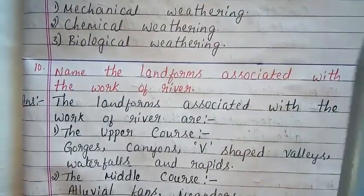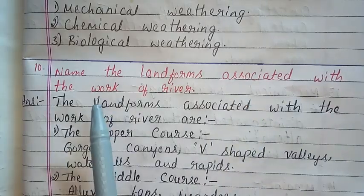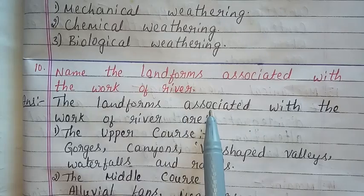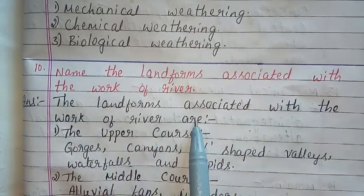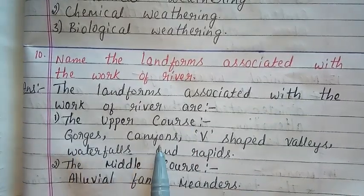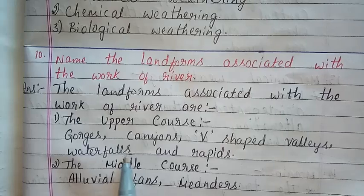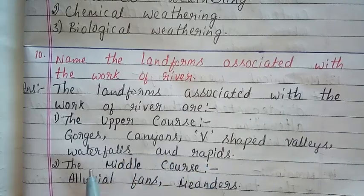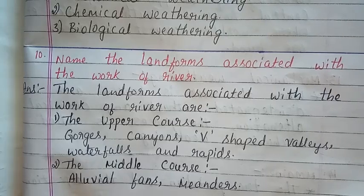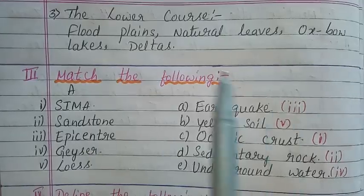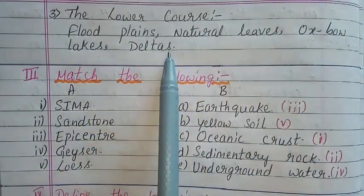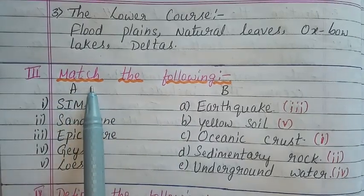Question 10: Name the landforms associated with the work of a river. Answer: The landforms associated with the work of a river are — Upper course: Gorges, Canyons, V-shaped valleys, Waterfalls and Rapids. Middle course: Alluvial fans, Meanders. Lower course: Flood plains, Natural levees, Oxbow lakes, Deltas.